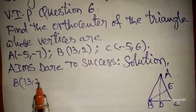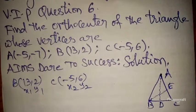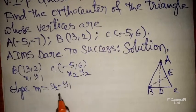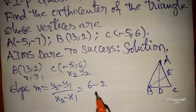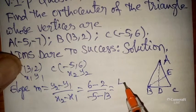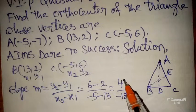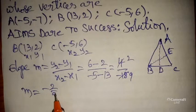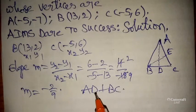From side BC: B value is (13, 2) and C value is (-5, 6) — let these be (x1, y1) and (x2, y2). By using two points, slope m = (y2 - y1) / (x2 - x1). Here, (6 - 2) / (-5 - 13) = 4 / -18. Cancelling, m = -2/9. Since AD is perpendicular to BC, we need to find the equation of AD.